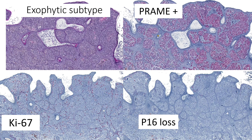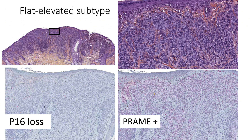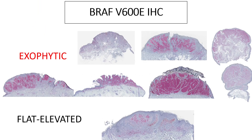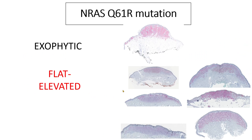We can find strong PRAME positivity and p16 loss — these are the usual markers for these melanomas, although PRAME can sometimes be less obviously positive. HMB45 can have a zonation pattern. In our experience, BRAF positivity is slightly more frequent in the exophytic architecture, but this is only a trend and it can also be found in flat elevated subtypes. We have a little bit the opposite trend for NRAS, which was slightly more frequent in the flat elevated subtypes compared to the exophytic architecture.